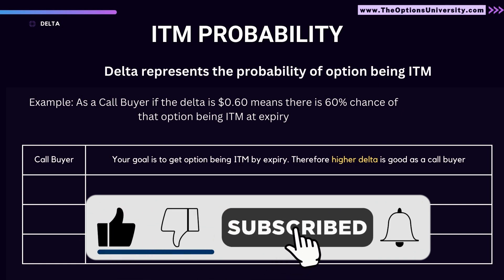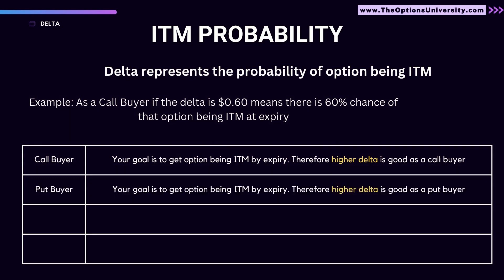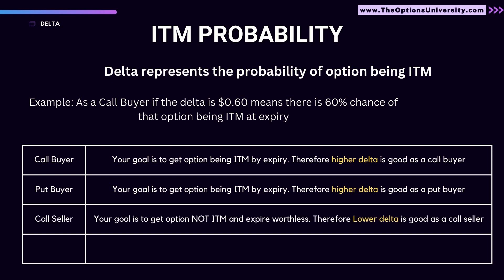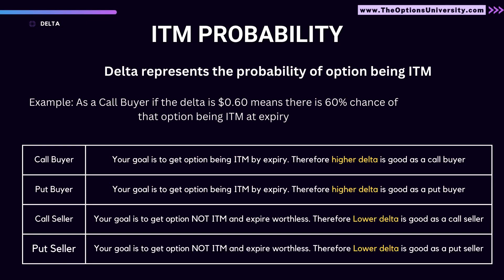As a put buyer, the same logic applies — you want more delta, meaning more chances of that option expiring in the money and being profitable. In the case of an option seller, it's exactly the opposite — you want the delta value to be lower, because you want the options to expire worthless. Your goal as a seller is for the option to not be in the money, so a lower delta is better.